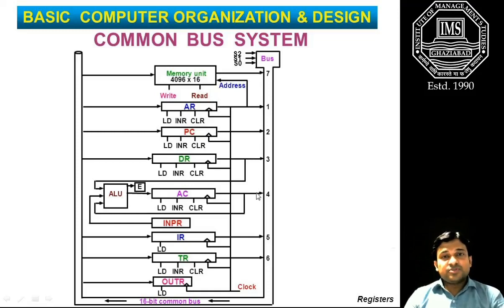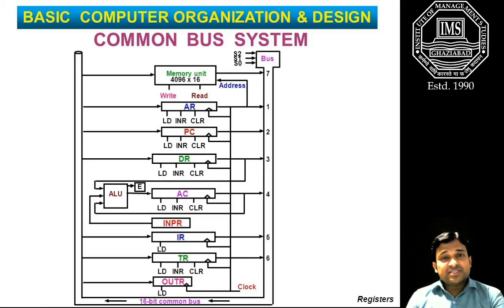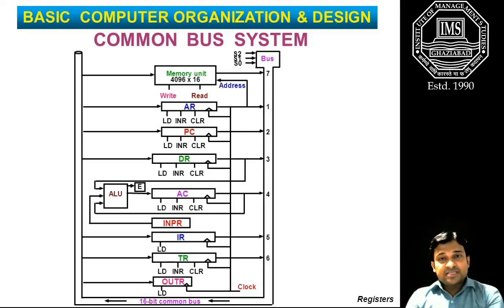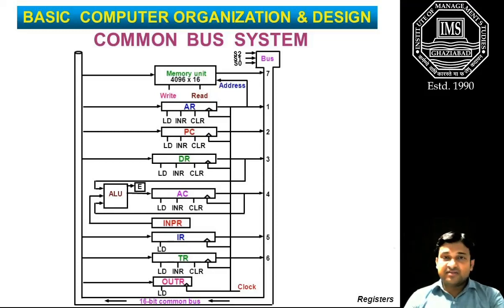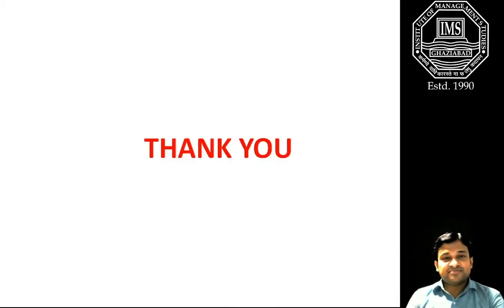In this way, all eight basic registers along with memory can share their data to the common bus, and through this common bus system we can perform efficient and effective execution of instructions within the CPU or control unit. I think this has been a fruitful session for you. Thank you, keep learning.